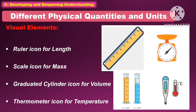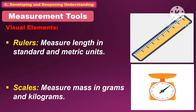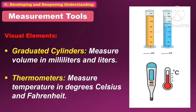The ruler icon is for length, the scale icon is for mass, the graduated cylinder icon is for volume, and the thermometer icon is for temperature. Rulers are used to measure length in standard and metric units. Scales are used to measure mass in grams and kilograms. Graduated cylinders measure volume in milliliters and liters. Thermometers measure temperature in degrees Celsius and degrees Fahrenheit.